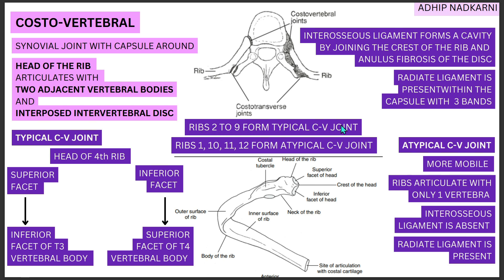Let's look at the typical costovertebral joint using the fourth rib as an example. The head of the fourth rib has a superior facet and an inferior facet. The superior facet articulates with the inferior facet of the T3 vertebral body, and the inferior facet articulates with the superior facet of the T4 vertebral body. So the fourth rib articulates with both T3 and T4.